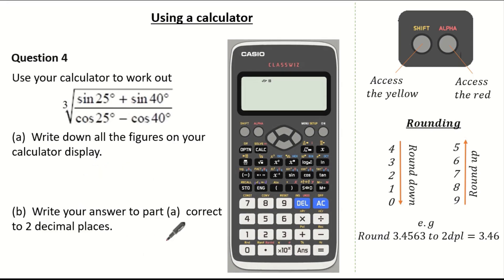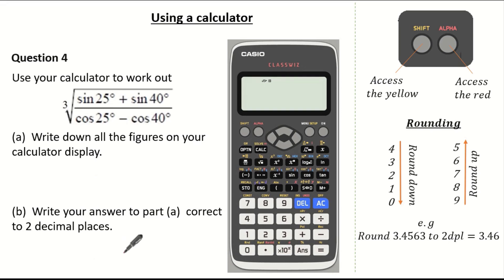So let's have a look at our last exam question. Here the question wants us to use our calculator to work out this calculation and write down all the figures on our calculator display. Part B wants us to write our answer to part A correct to two decimal places. See if you can give it a go and press pause if you need.